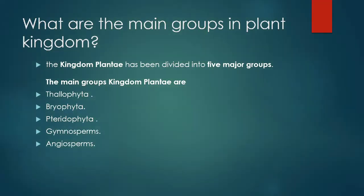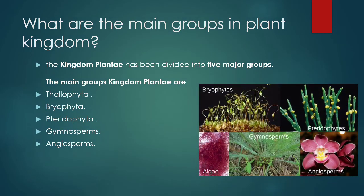What are the main groups in the plant kingdom? The plant kingdom is divided into five major groups: thallophyta, bryophyta, pteridophyta, gymnosperms, and angiosperms.